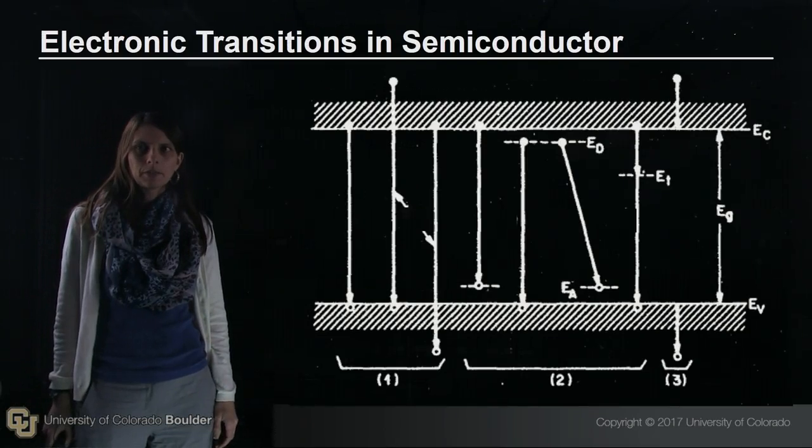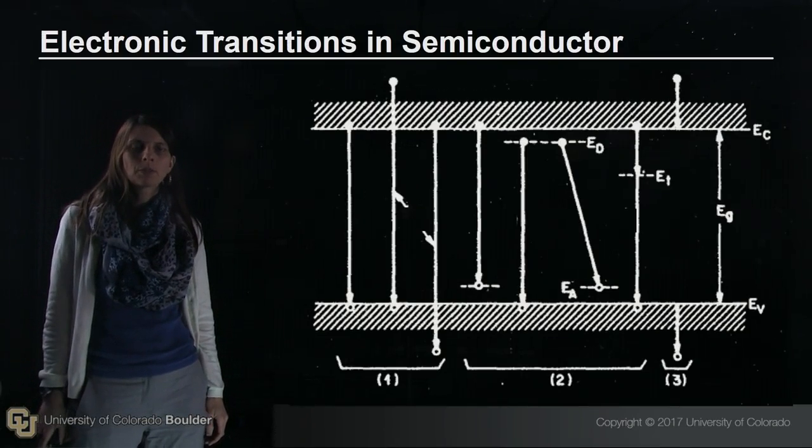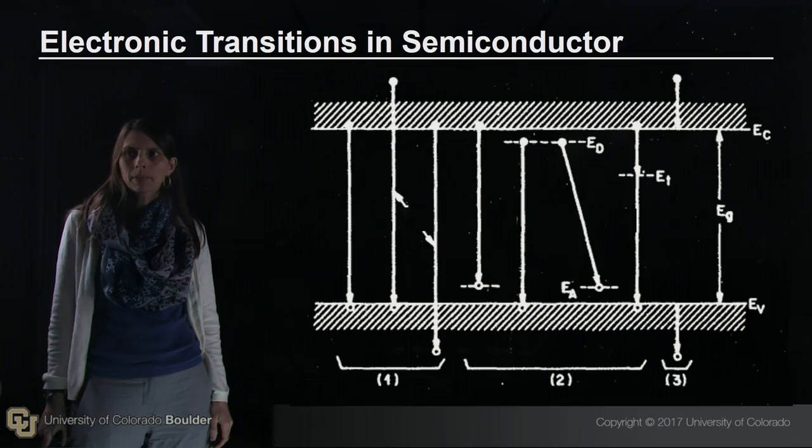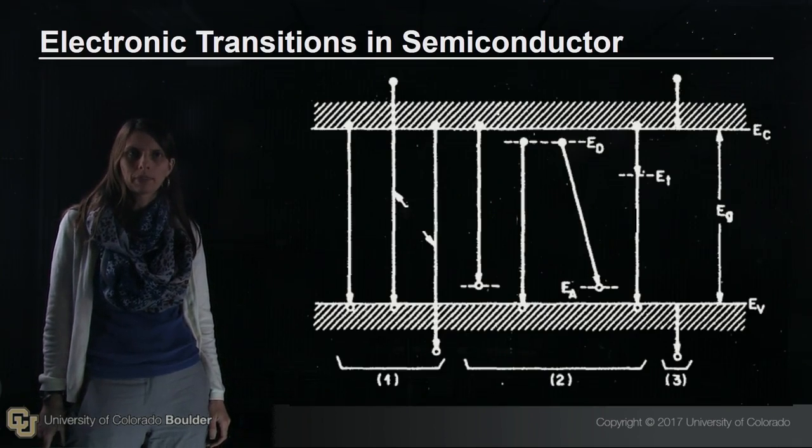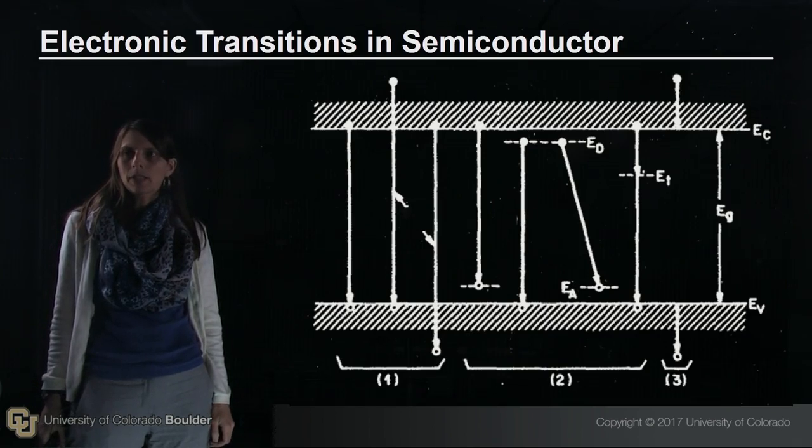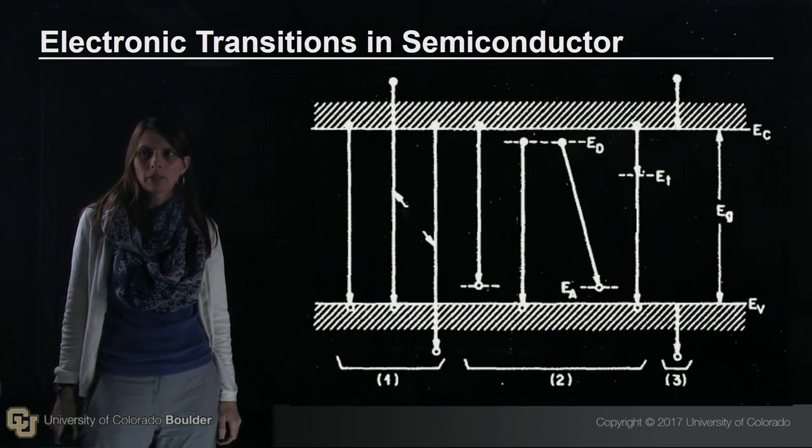I'd like to talk about radiative transitions in semiconductors. In order to design, fabricate, and operate light-emitting devices, we need electrons and holes to combine radiatively. This means when an electron and a hole recombine, the extra energy goes into emission of a photon.